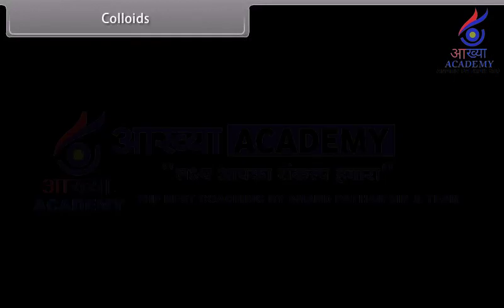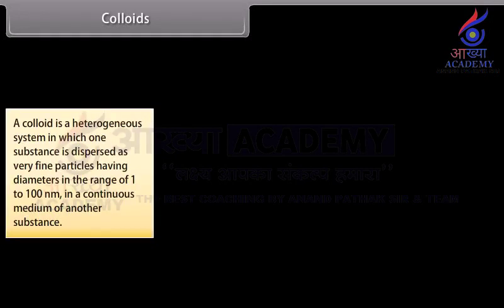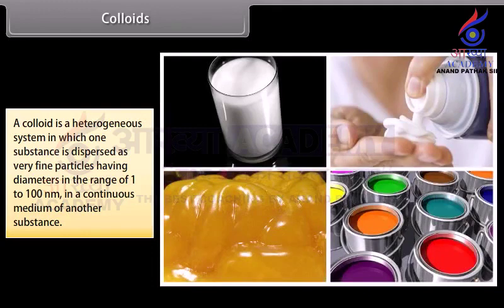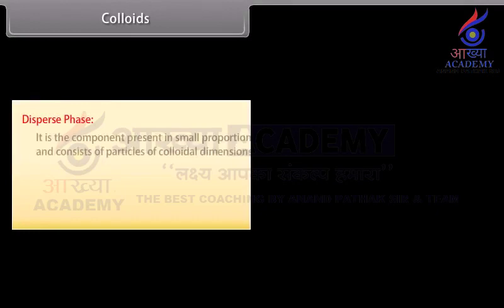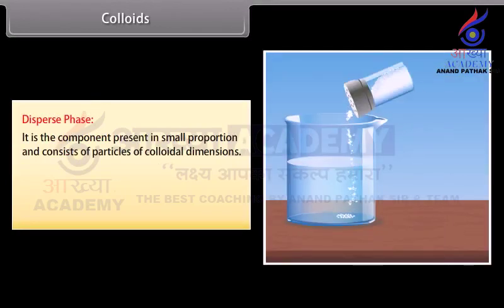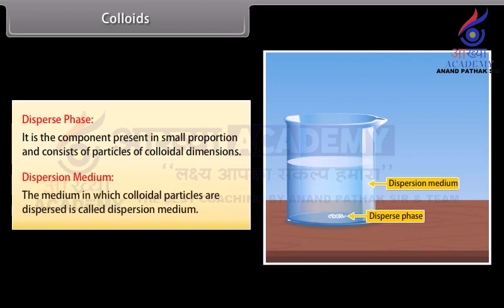Colloids. A colloid is a heterogeneous system in which one substance is dispersed as very fine particles having diameters in the range of 1 to 100 nanometers in a continuous medium of another substance. Examples include milk, shaving lather, jelly, and paint. A colloidal solution is heterogeneous in nature and always consists of at least two phases: the disperse phase and the dispersion medium. The disperse phase is the component present in small proportion and consists of particles of colloidal dimensions. The dispersion medium is the medium in which colloidal particles are dispersed.